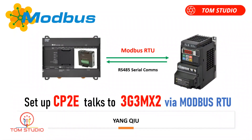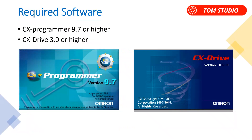In this training tutorial, I will run through the whole process about how to set up Modbus serial communications between CP2e PLC and 3G3 MX2 drive. You will learn quite many things like how to set up the PLC, utilizing Modbus RTU function blocks, how to set up the serial option board, how to set up 3G3 MX2 Modbus parameters, and so on. Let's get started.